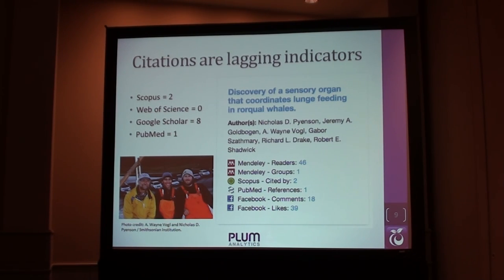Here's an example of an article by a Smithsonian researcher — he's a whale researcher. This is a Nature article that came out in 2012. In the first eight months, Google Scholar had found eight citations; it hadn't hit Web of Science yet. Scopus had two. But look at all this stuff that's also going on with it in the meantime — you can tell people have been downloading it and saving it for later, it's been getting action on Facebook, et cetera. So if we wait for citations it's going to take a while, but there's a lot going on in the meantime.